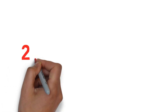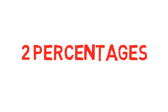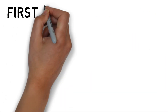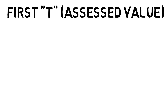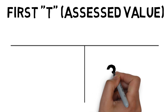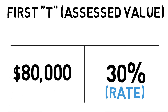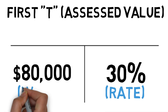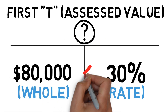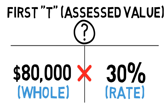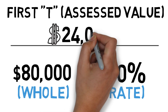Let's begin with the assessed value. Thirty percent goes in the bottom right of our first T. The total value is eighty thousand, so our formula says to multiply straight across. We take eighty thousand times thirty percent to give us our assessed value of twenty-four thousand dollars.